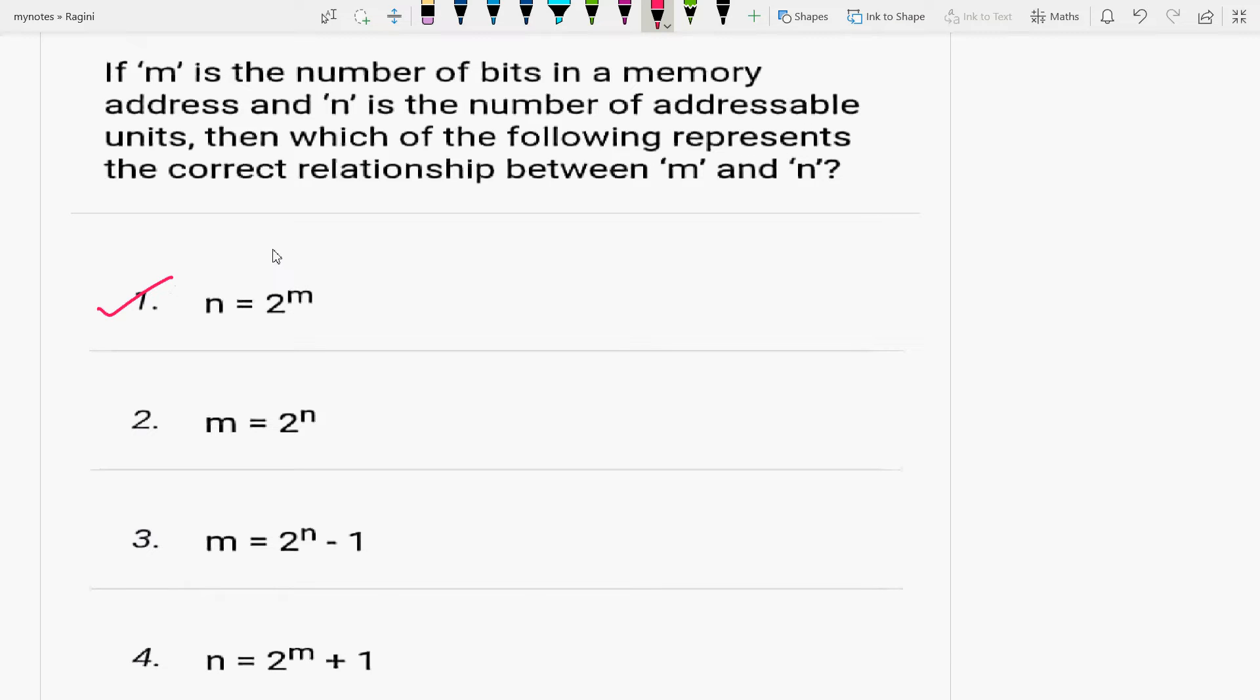This is what happens: if we have a memory of 1024 bytes addressable units, then we need 10 bits to address complete memory. 2 to the power 10.